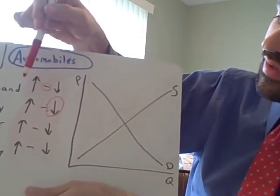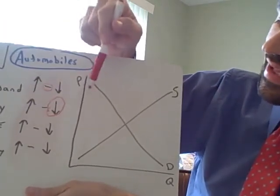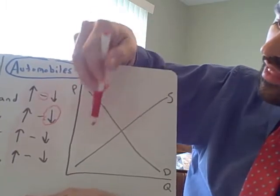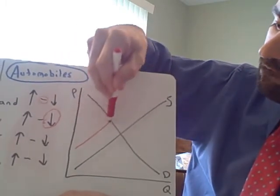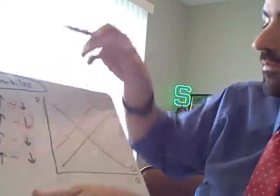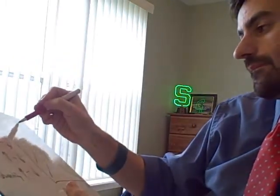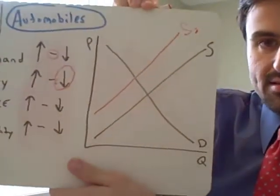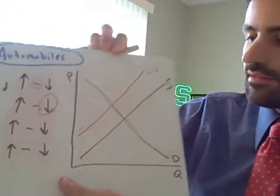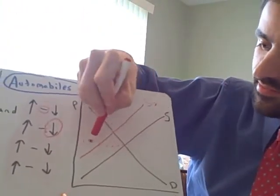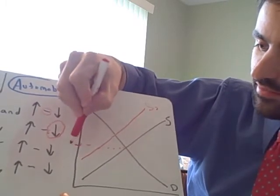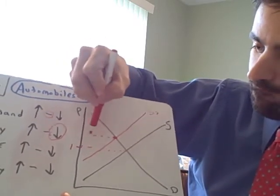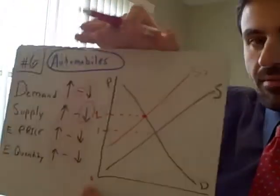Supply is going to go, you're going to supply less. You need to shift left. Looks like up. You can't say up. You need to say less. Left, less. Can you see the price? You should be getting pretty good at this.